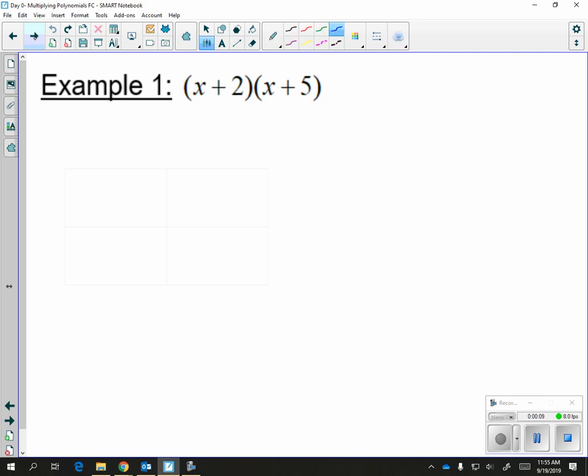So in our first example, we have the product of two binomials. In other words, they both have two terms each, which means we are going to make a box that is two by two.